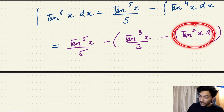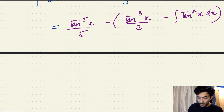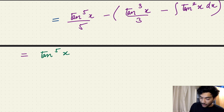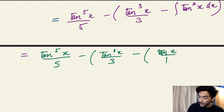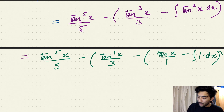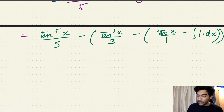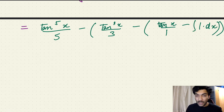Let's apply the same reduction formula one last time to calculate this indefinite integral. Our expression becomes tan to the power 5 of x upon 5, minus tan cubed of x upon 3, minus tan x upon 1, minus the integral of tan to the power 0 of x dx — because n minus 2 gives power zero. And tan to the power 0 of x is just 1, so we're integrating dx, which is simply x.